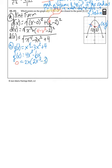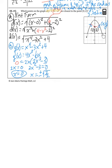Setting each factor equal to zero: from 2x = 0, we get x = 0. From 2x² − 3 = 0, we get x² = 3/2, so x = ±√(3/2). Note that x represents an x-coordinate and can be any real number — positive, negative, or zero — so we keep both the positive and negative values. We now have three critical values: x = −√(3/2), x = 0, and x = √(3/2).